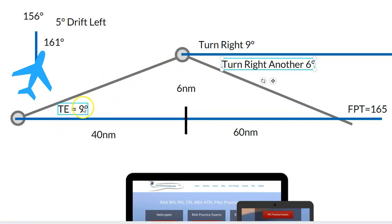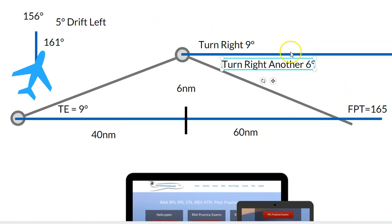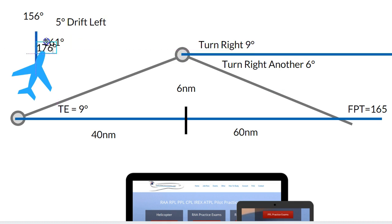We've flown off track and worked out we're nine degrees off track. Turning nine degrees right gets us flying parallel — that doesn't solve the problem. We want to be back on track, and using the 1 in 60 rule: six nautical miles off track in 60 nautical miles is six degrees. So in total that's a 15-degree right turn. We were heading 161, so 161 plus 15 equals 176 degrees — that's the new heading the aircraft needs to fly.